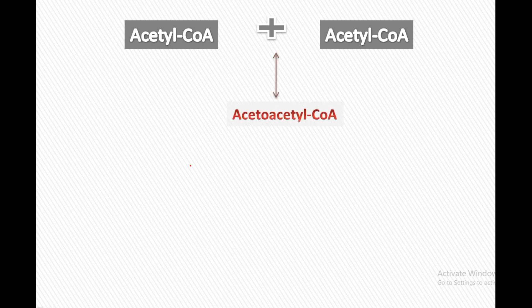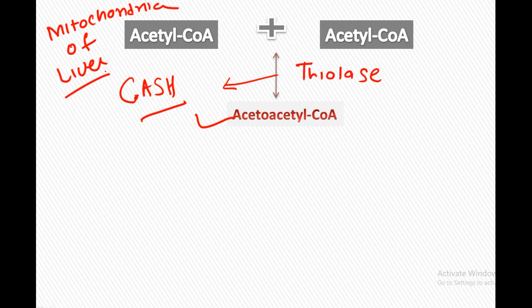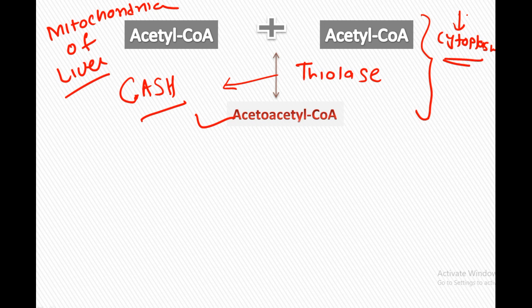Now we will see how ketone bodies are synthesized. Two molecules of acetyl-CoA, with the help of the thiolase enzyme, form acetoacetyl-CoA, and here one CoA-SH group is removed. This ketone body synthesis takes place in the mitochondria of the liver. A similar step is seen in cholesterol biosynthesis, but that takes place in the cytoplasm, while ketone body formation takes place in the mitochondria.